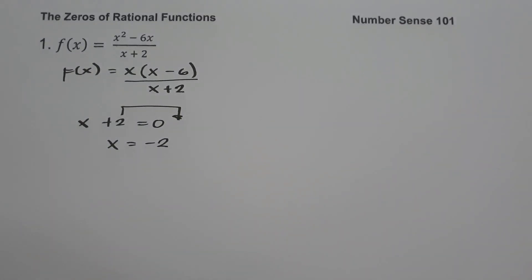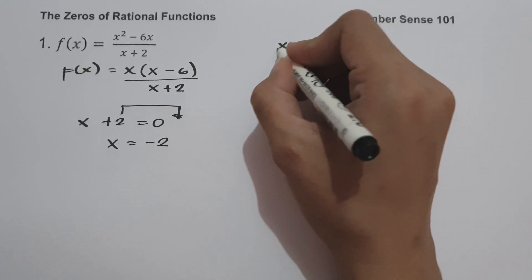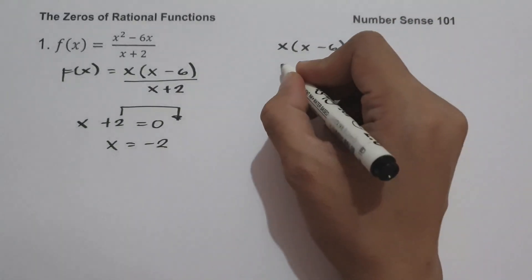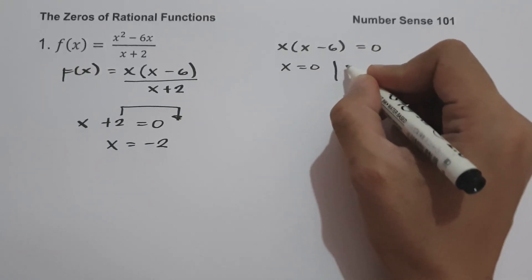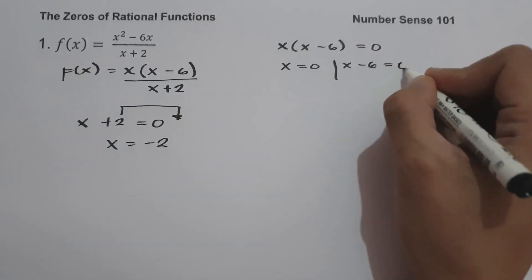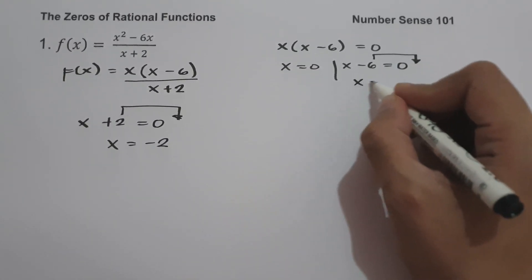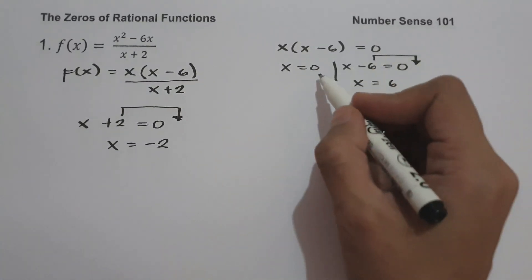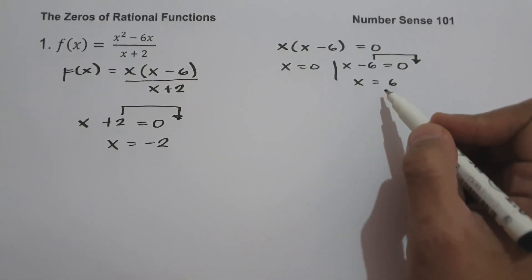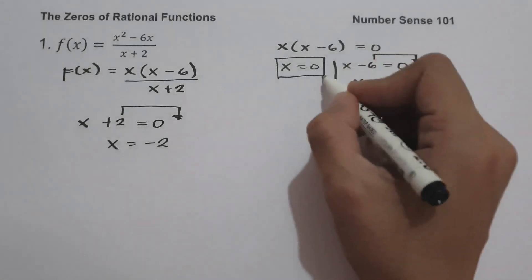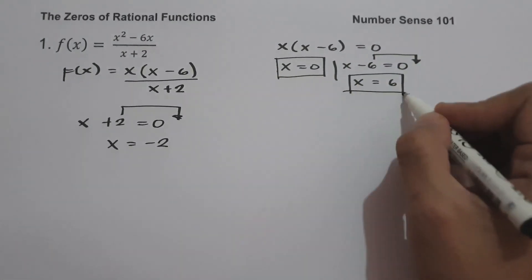Next, we identify the values of x that make the numerator equal to 0. Setting x times quantity x minus 6 equal to 0 gives us x equals 0 and x minus 6 equals 0, so x equals 6. Since 0 and 6 are not restricted values, the zeros of the function are 0 and 6.